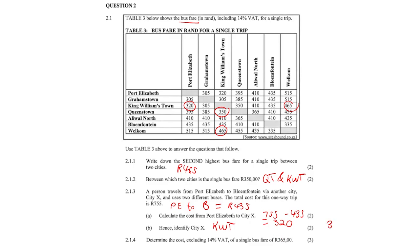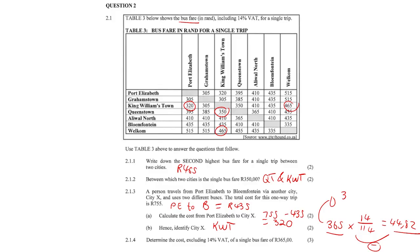To remove VAT that is currently included, we say 365 times 14% over 114, because 100% is excluding VAT and if we add VAT back it becomes 114%. So 365 times 14 over 114 gives us 44.82 rand. Then 365 minus 44.82 equals 320 rand and 18 cents.